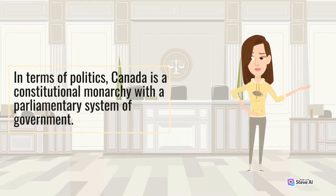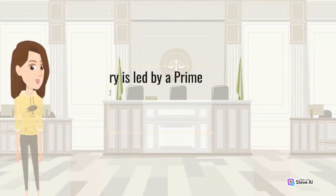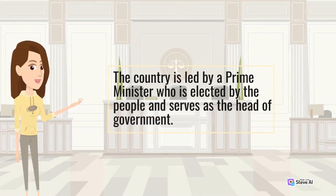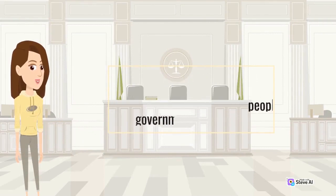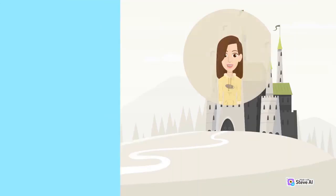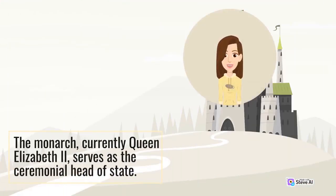In terms of politics, Canada is a constitutional monarchy with a parliamentary system of government. The country is led by a prime minister who is elected by the people and serves as the head of government. The monarch, currently Queen Elizabeth II, serves as the ceremonial head of state.